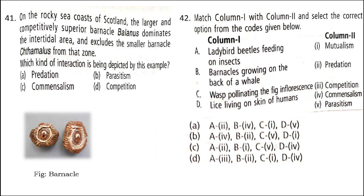Next: on the rocky shores of Scotland, the larger and comparatively superior barnacle Balanus dominates the intertidal area and excludes the smaller barnacle Chthamalus from that zone. Which kind of interaction is being depicted? The correct answer is option D: Competition. Competition keeps the population of the inferior species under check. The superior barnacle nearly excluded the smaller barnacle. But if Balanus population is reduced, competition is released and Chthamalus population increases.